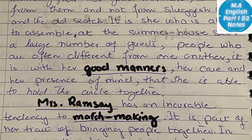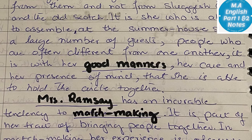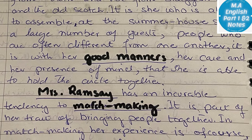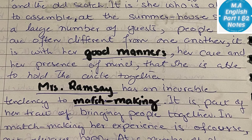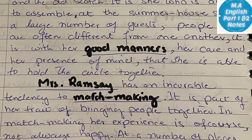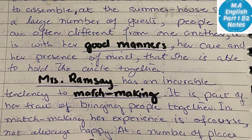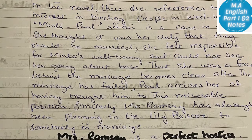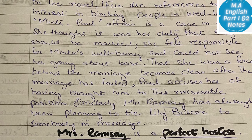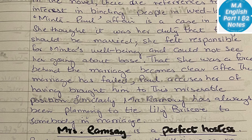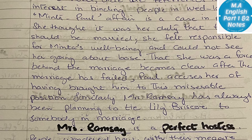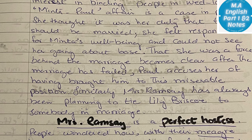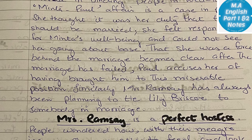Mrs. Ramsey has an incurable tendency to matchmaking. It is part of her trait of bringing people together. In matchmaking, her experience is of course not always happy. There are references in the novel to her interest in binding people in wedlock. The Minta and Paul affair is a case in point — she thought it was her duty that they should be married.